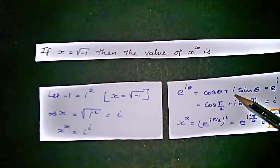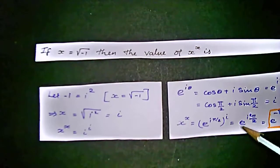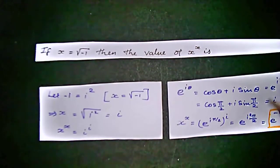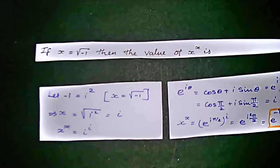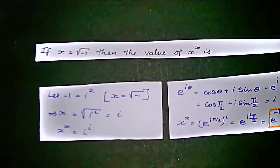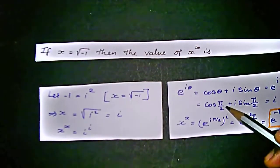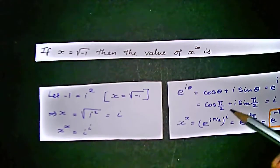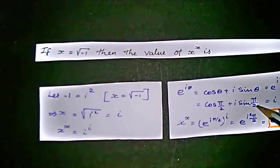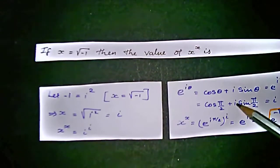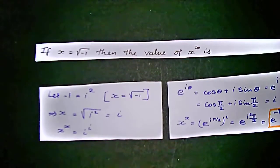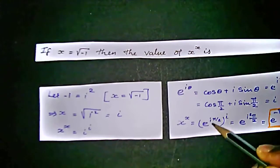If we know that e power i theta equals cos theta plus i sine theta, which we derived in complex terminology, we can apply e power i pi by 2, that is cos pi by 2 which equals 0, and sin pi by 2 which equals 1. So we'll get i as an answer: 0 plus i times 1, that is i. So we apply theta equals pi by 2, and we get e power i pi by 2 power i.